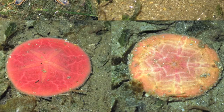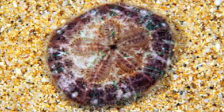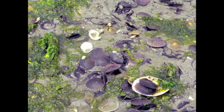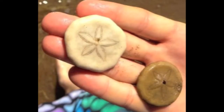Depending upon the species, they can be a variety of colors — yellow-orange, blue-greens, and even black — but Dendraster eccentricus, the species found in the Salish Sea and ranging from Alaska to Baja California, is dark purple. The many species have a variety of common names around the world, including sea cookie or snapper biscuit in New Zealand, and pansy shell in South Africa.